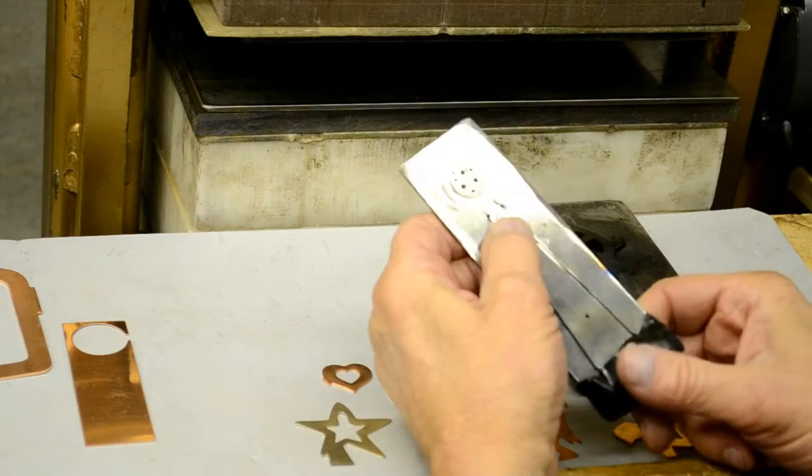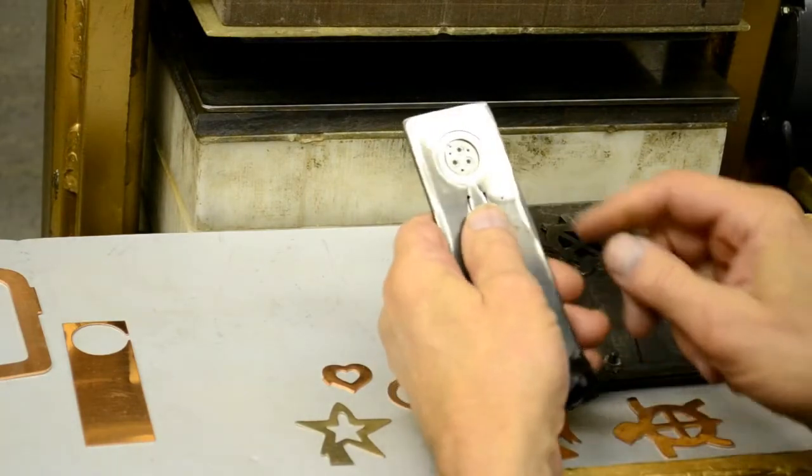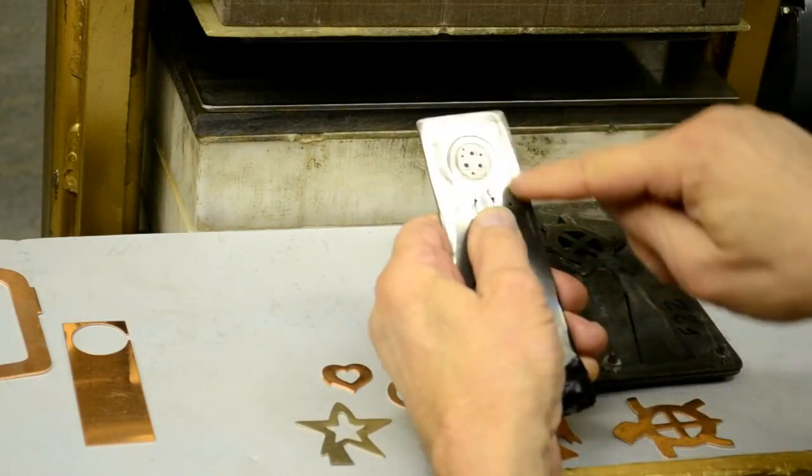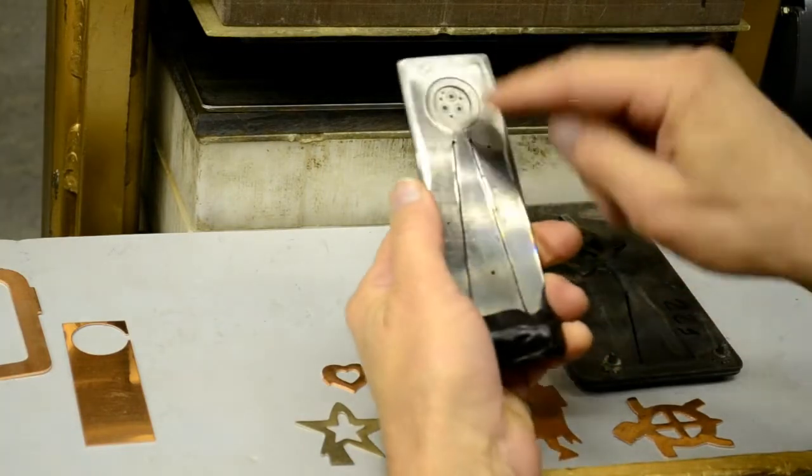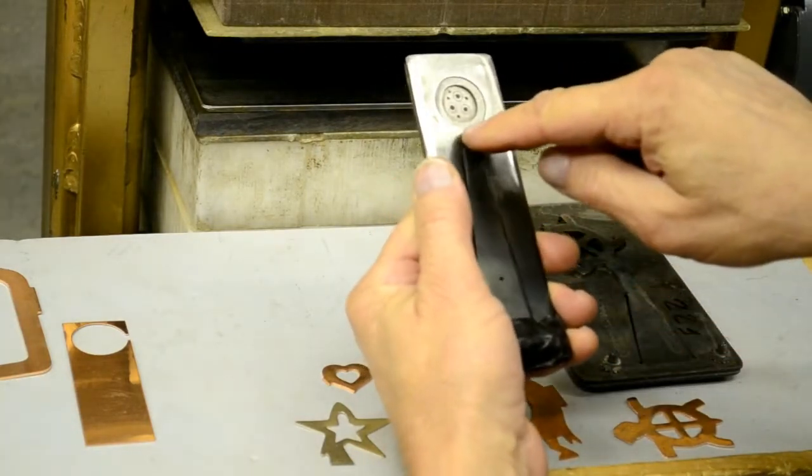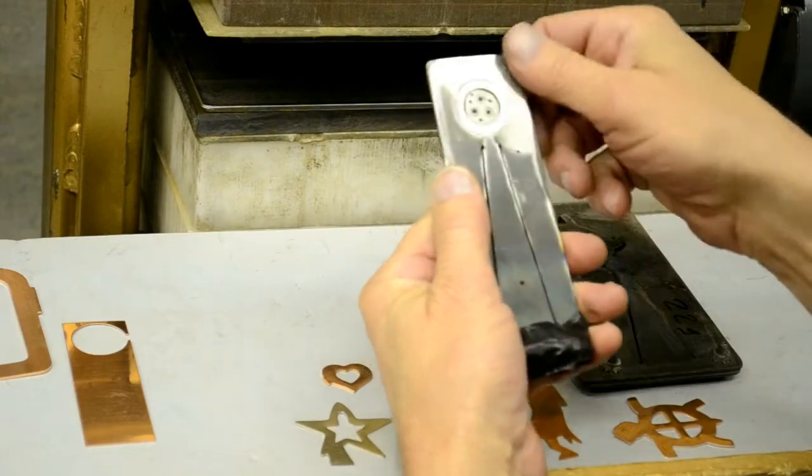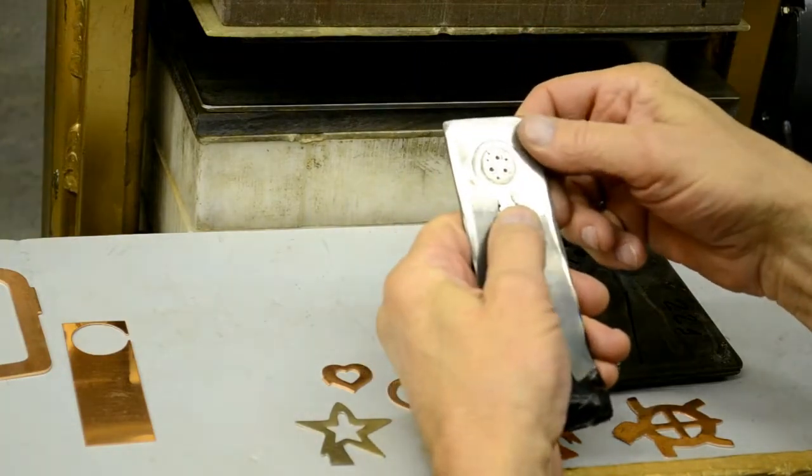He got the idea of taking a regular pancake die, which is what this front plate is. It's got the hinge and this outer ring cuts the outer perimeter of the part.